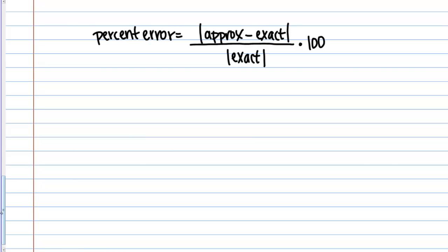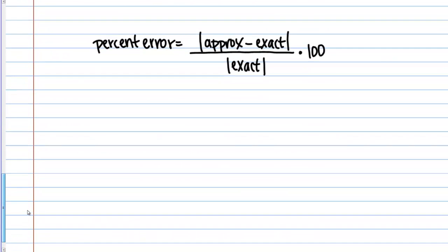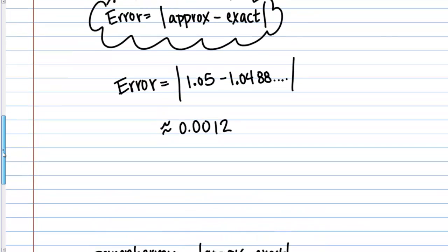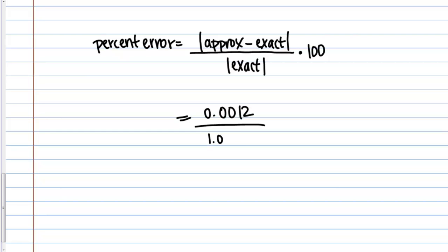Let's apply this and continue with the same example. Let's find the percent error of our square root approximation. We found this numerator to be 0.0012 previously. Then we need to divide that by the absolute value of the exact quantity, which if you remember was this 1.0488. Then multiply that by 100 to get a percentage. If you actually carry out that calculation, you'll get 0.11%. Our percent error is about 0.1% for this approximation.